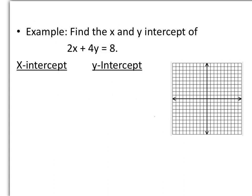Our first example is to find the x and y intercept of 2x plus 4y equals 8. To find the x intercept, we are going to let y equal 0. So 2x plus 4 times 0 equals 8.